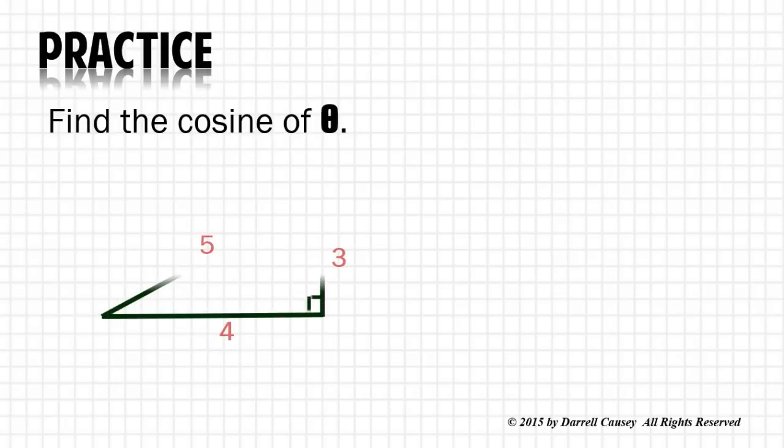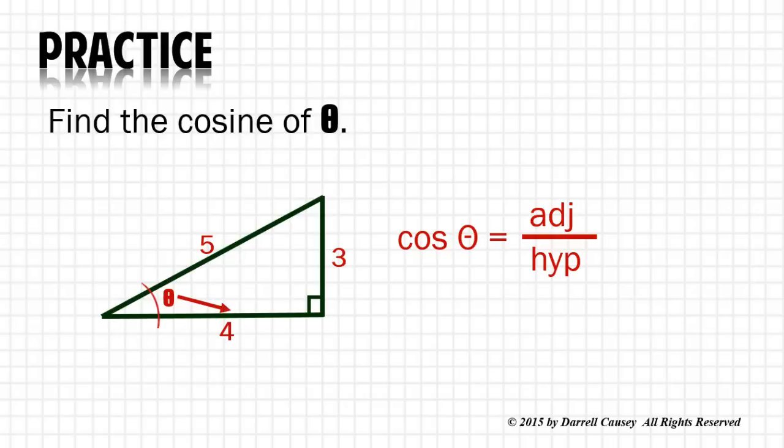Find the cosine of θ. That's adjacent over hypotenuse. There's our adjacent side, so we have 4 over 5.